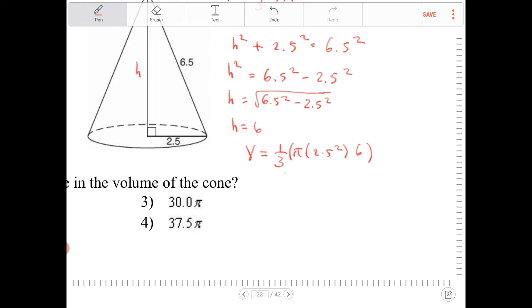So looking at this, I know the 3 and the 6 cancels, so I'm left with 2 pi times 2.5 squared.